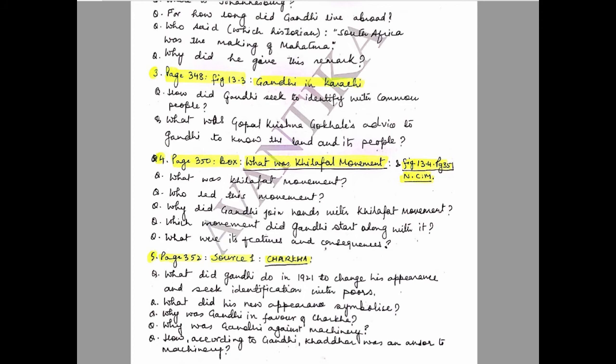Question 4: Page 350 box — What was the Khilafat movement? And Figure 13.4, page 351 — Non-Cooperation Movement. Questions: What was the Khilafat movement? Who led this movement? Why did Gandhi join hands with the Khilafat movement? Which movement did Gandhi start along with it? What were its features and consequences?